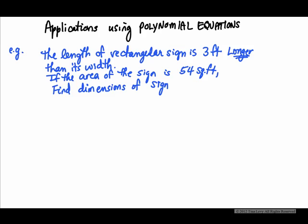We're now going to do a few applications that use polynomial equations — we create them. The first example: suppose the length of a rectangular sign is 3 feet longer than its width. If the area of the sign is 54 square feet, find the dimensions of the sign.